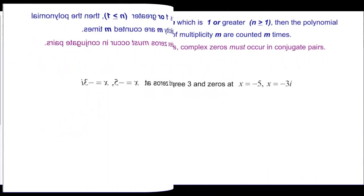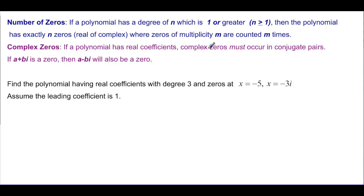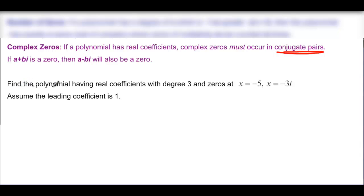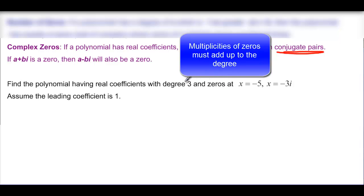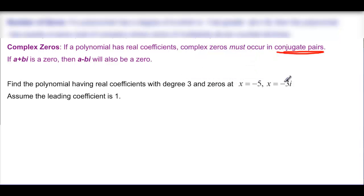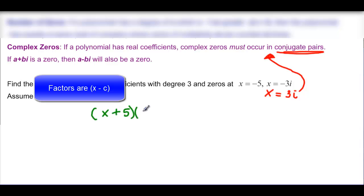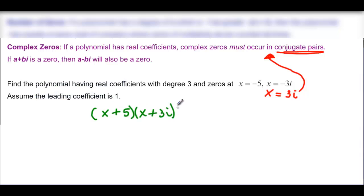For the complex zeros: if a polynomial has real coefficients, the complex zeros must occur in conjugate pairs — a + bi and a - bi. We need to find a degree-3 polynomial with real coefficients where the zeros include -5 and -3i. Because of the conjugate pairs rule, +3i must also be a zero. Writing in factored form: (x + 5)(x + 3i)(x - 3i).